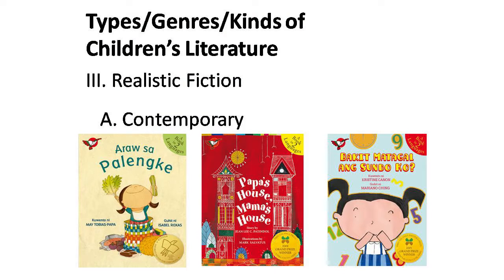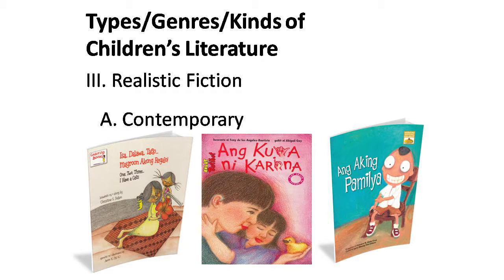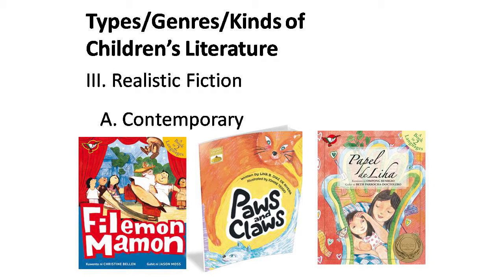Then there is realistic fiction — stories about things that could happen to your neighbor or to you. Very true to life. These stories deal with real problems: family, disability, growing up, finding peer acceptance. For example, the issue of separation — 'Papa's House, Mama's House' — which also won a prize.